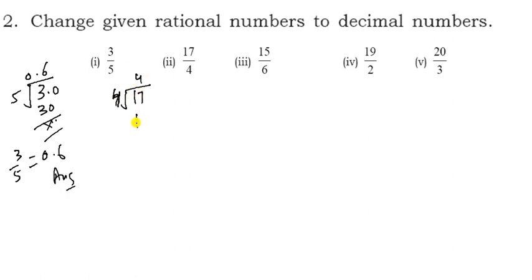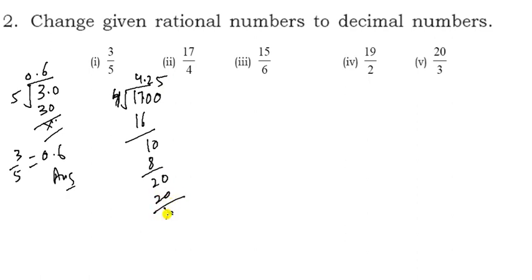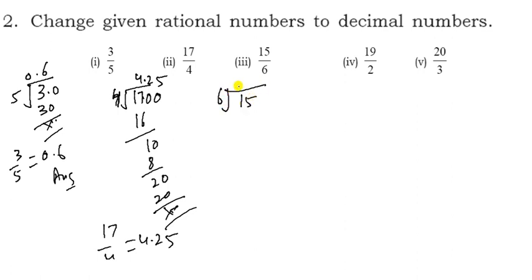For 17 upon 4: divide 17 by 4. Four 4s are 16, remainder 1. Place the decimal, bring down 0. Four 2s are 8, remainder 2. Bring down 0: four 5s are 20. So 17 upon 4 = 4.25. It is a terminating decimal.